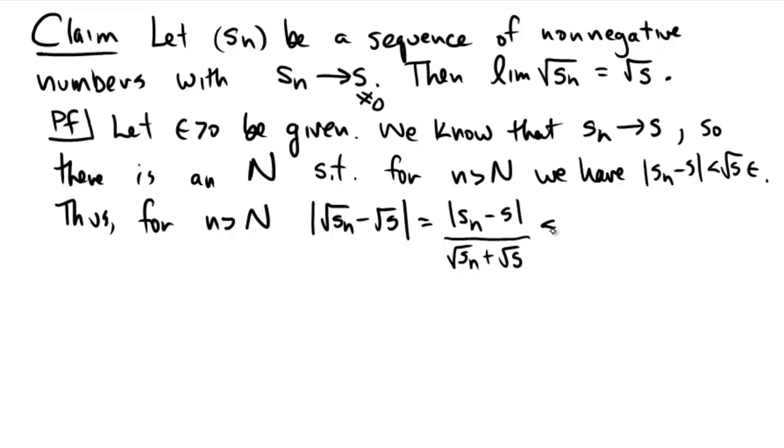Now let's make this bigger. So to make something bigger, all we really have to do is make the denominator smaller. So I'm going to make the denominator a little bit smaller. On the top I'm going to have absolute value Sn minus S, and in the bottom I'm just going to have radical S. Because since radical Sn is positive, by neglecting it, I'm making my denominator smaller, and thus I'm making my fraction larger.